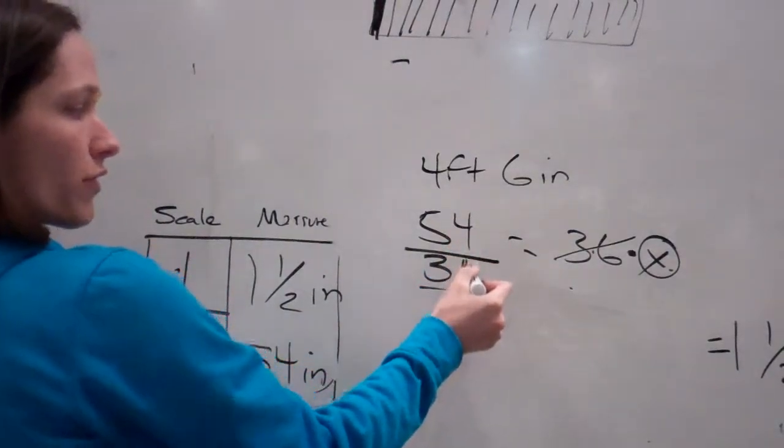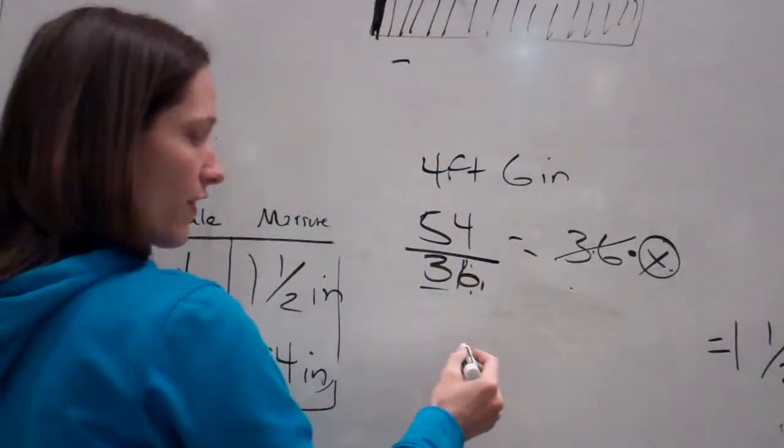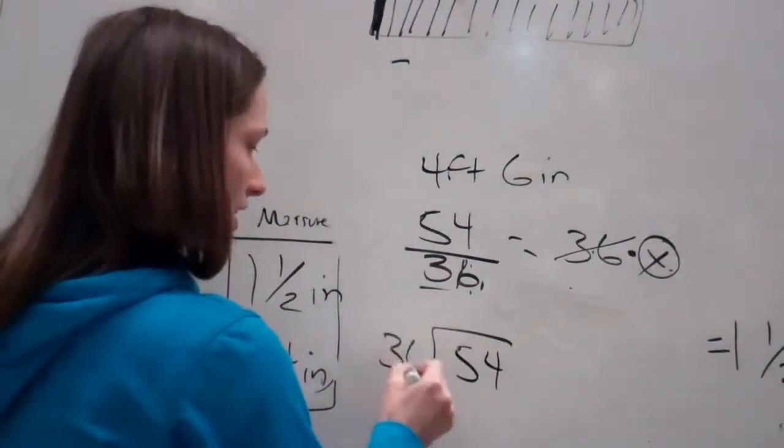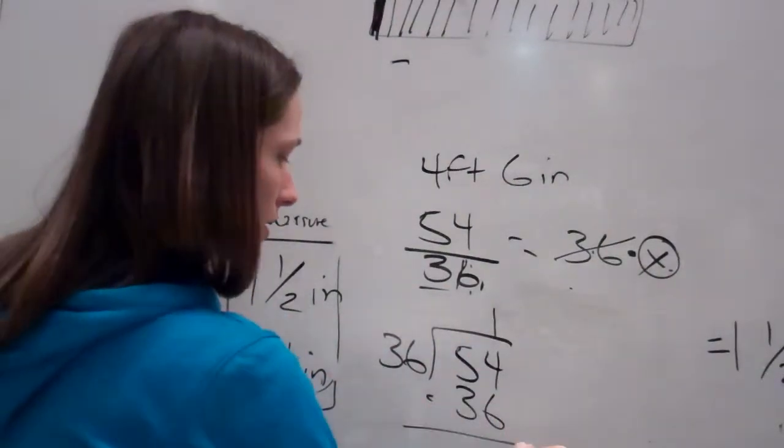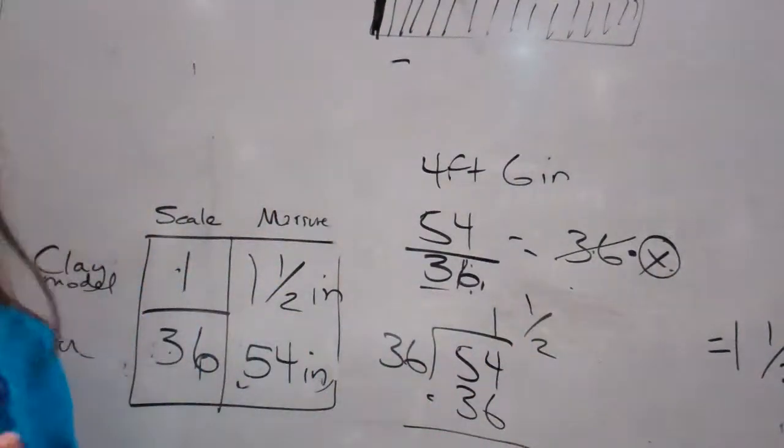And when we divide by 36, it takes away that one. So, then it's 54 over 36. And then when we reduce that and divide 54, divided by 36, I would end up getting 1 and 1 half. Got it?